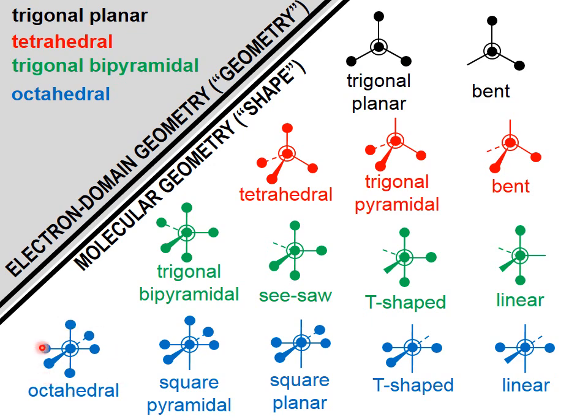Octahedral molecular geometry results when all of the domains are bonding domains. If you have one non-bonding domain, that's called square pyramidal. If you have two non-bonding domains, that's called square planar. If you have three non-bonding domains, that's called T-shaped. And if you had four non-bonding domains, that would be a linear molecular geometry.